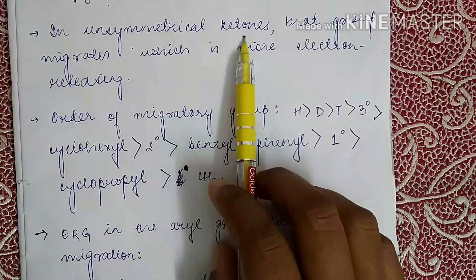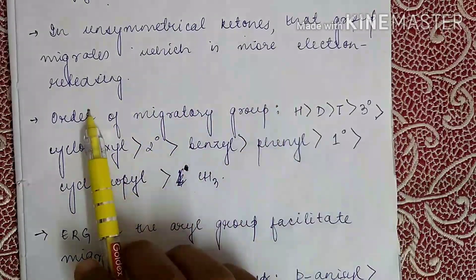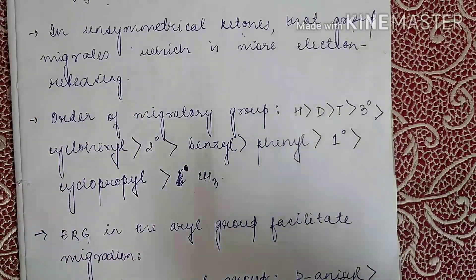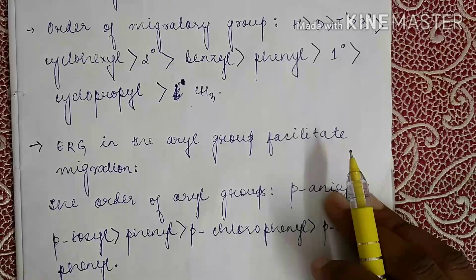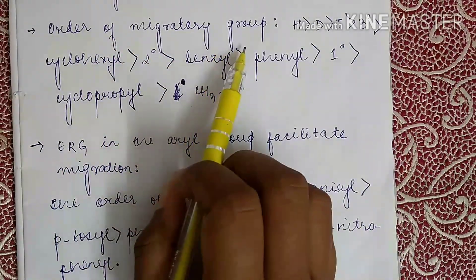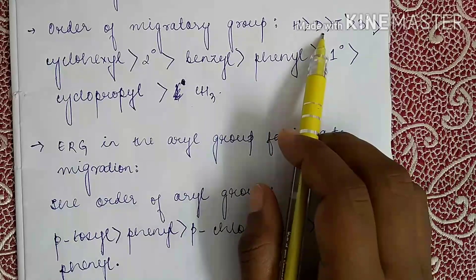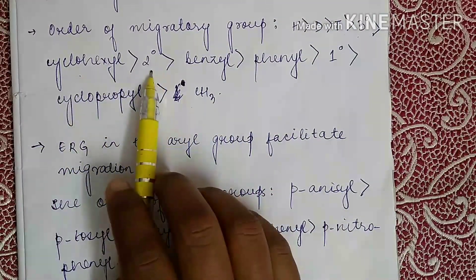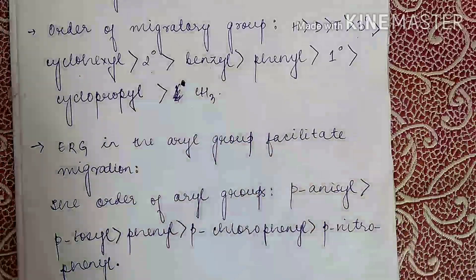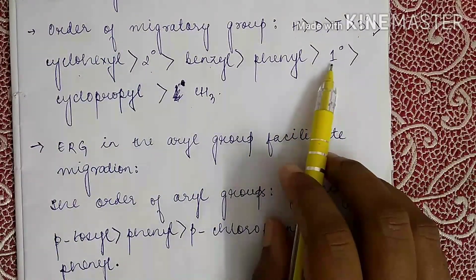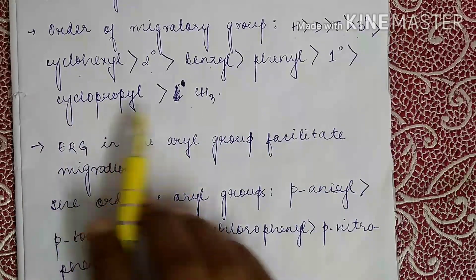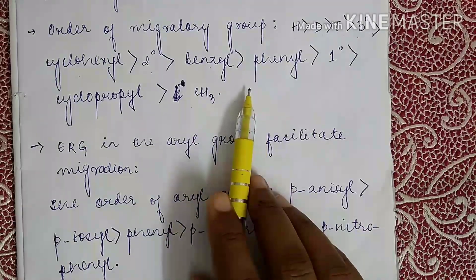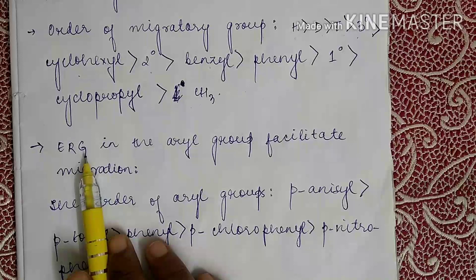In the case of unsymmetrical ketones, the group that will migrate is the one that is more electron-releasing. The order of migratory aptitude is: hydrogen > deuterium > tritium > tertiary alkyl > cyclohexyl > secondary alkyl > benzyl > phenyl > primary alkyl > cyclopropyl > methyl. Please remember this migratory order of groups.